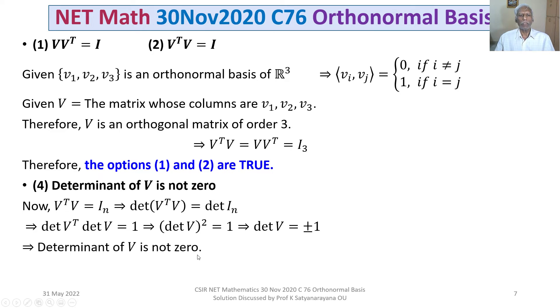Thus, option 4 is true. We can get the assertion determinant of V is not zero even by the following argument.